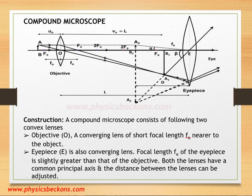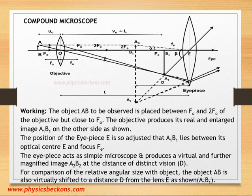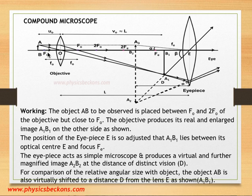The object AB to be observed is placed between FO and 2FO of the objective, but closer to F. You can see here: the objective has FO and 2FO marked, and AB is placed between FO and 2FO, but closer to the focus of the objective.